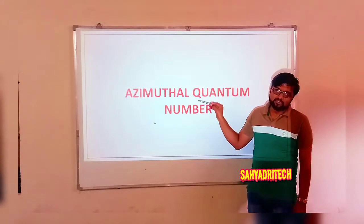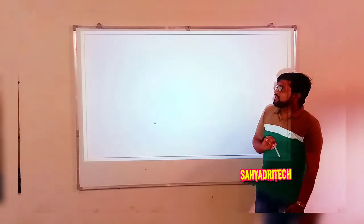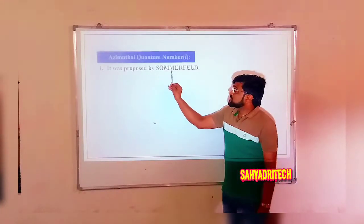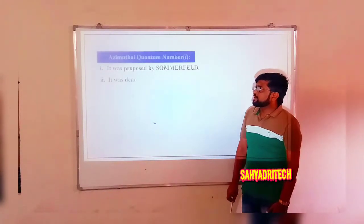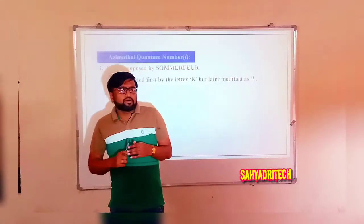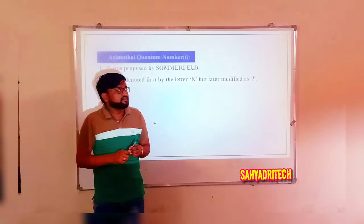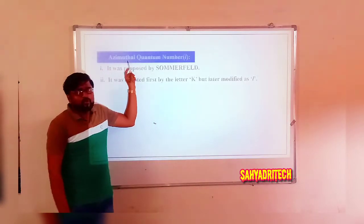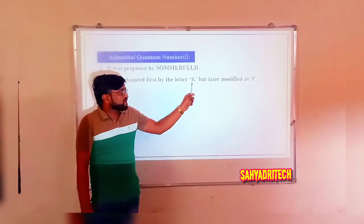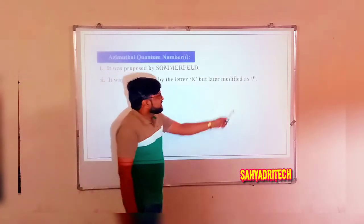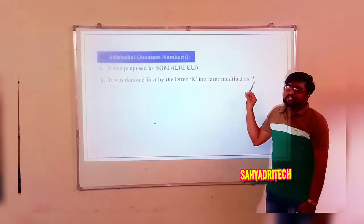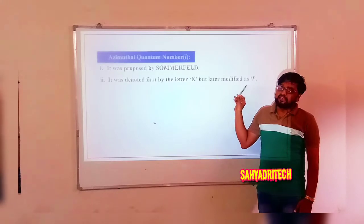The azimuthal quantum number concept was proposed by Sommerfeld. Just as the principal quantum number uses the symbol small n, the azimuthal quantum number is represented by the letter small l. Earlier Sommerfeld gave the letter capital K, but it was later modified. The azimuthal quantum number is also called the orbital angular momentum quantum number, the subsidiary quantum number, or the secondary quantum number.